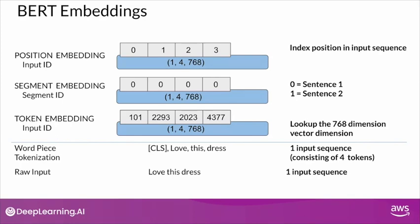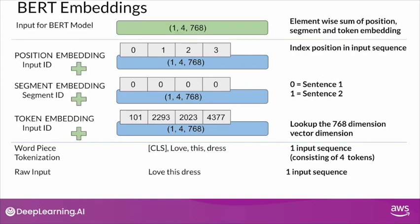Once I have the three individual embeddings, it's time to pull all of these together. The final step includes determining an element-wise sum of the position, segment, and token embeddings that have been previously determined. So the final embedding is of dimension 14×768 in this particular case, which makes sense because I started with one input sequence of three different words and applied word piece tokenization with pre-trained models of dimension 768. This word embedding can be applied directly to the BERT algorithm as an input.